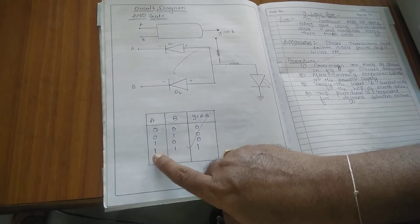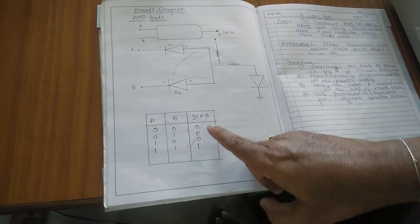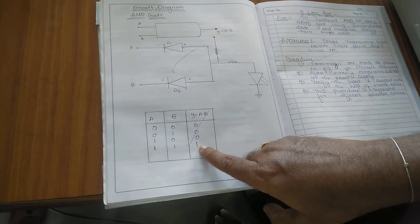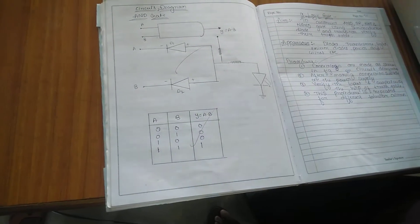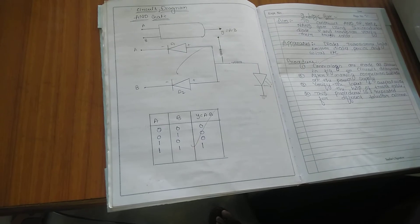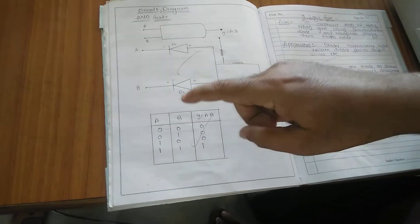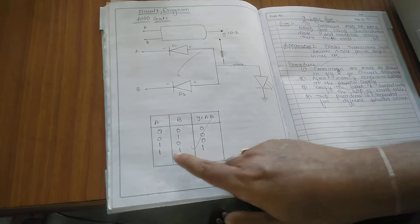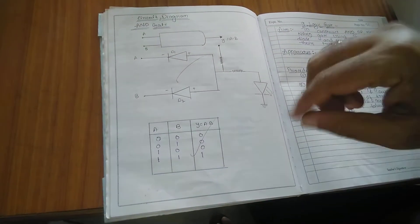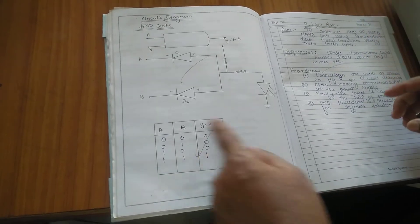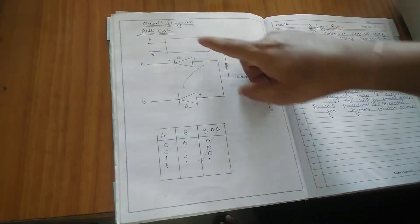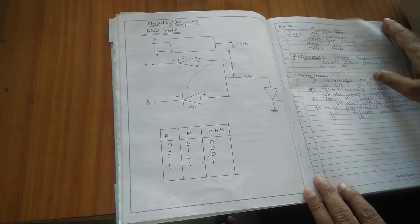If A is 1 and B is 1, the output is 1. Here, 0 means false or off, and 1 means true or on. This completes the verification of the AND gate — its construction and verification.